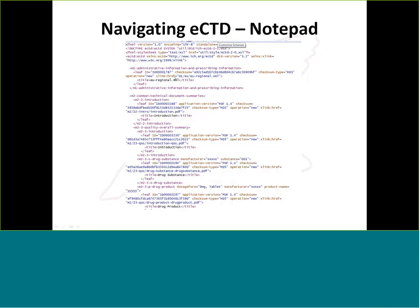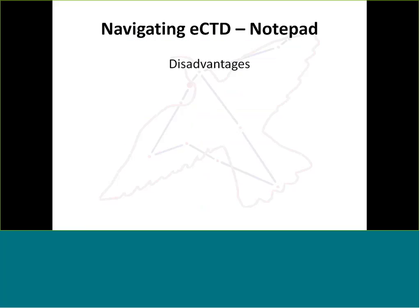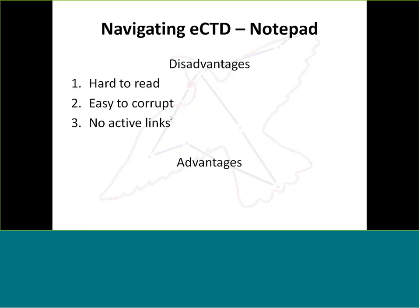If you open the index.xml in Notepad, the contents look like a whole bunch of code that no one can easily read. It is technically human readable, and computers can read it, but it's hard to read, it's easy to corrupt — if you type anything in and hit save, your index is broken — and there are no active links. You can't click on anything and go anywhere. Advantages? None. Don't do it.